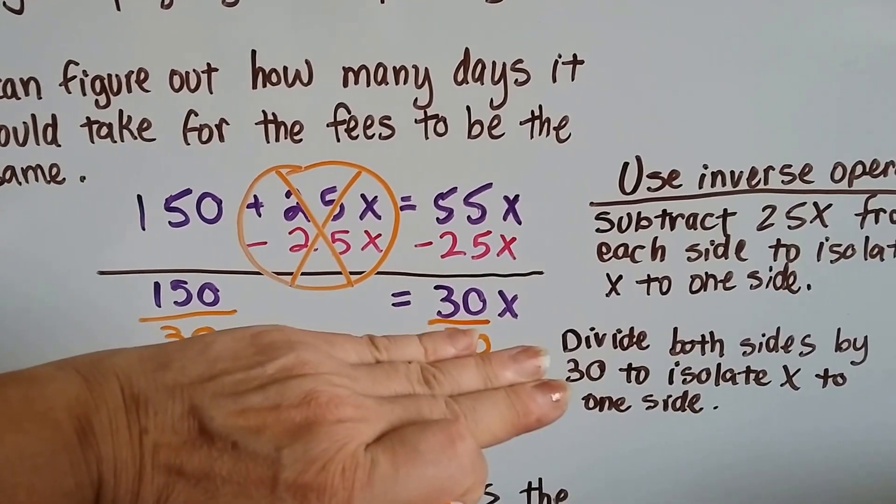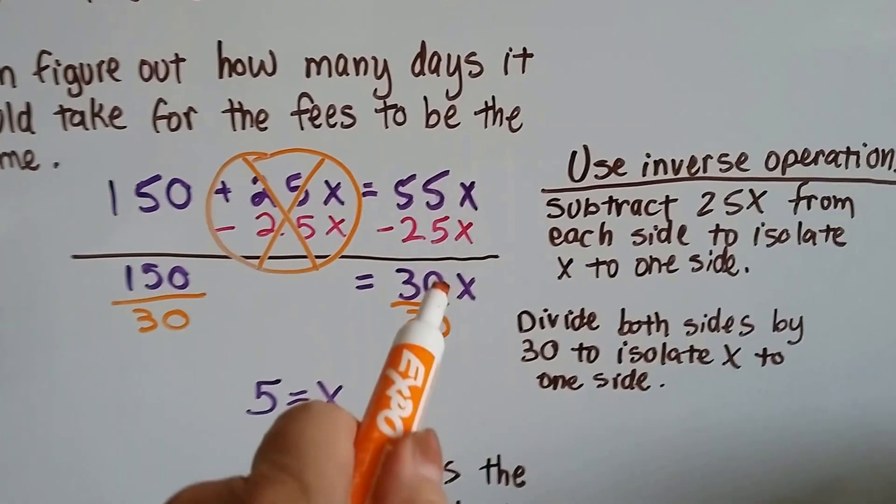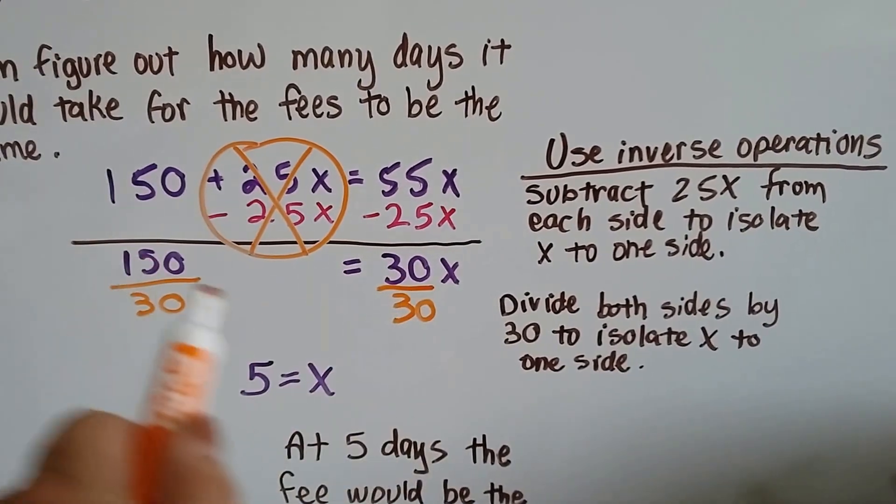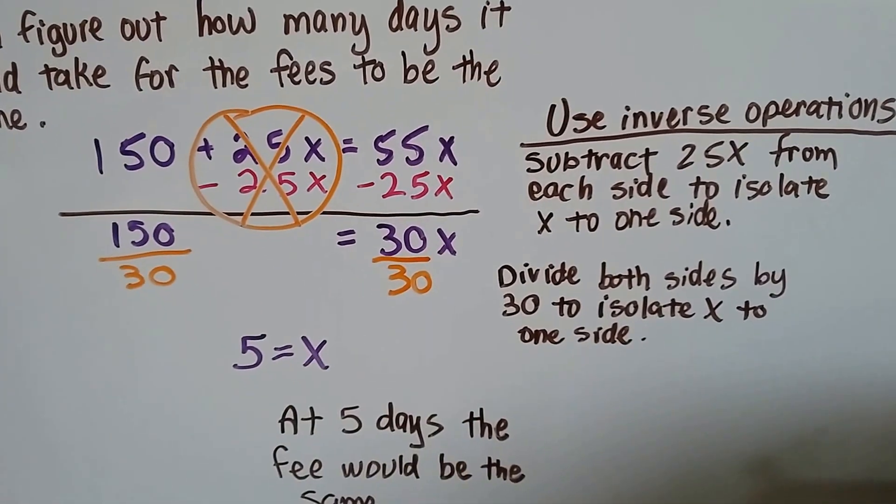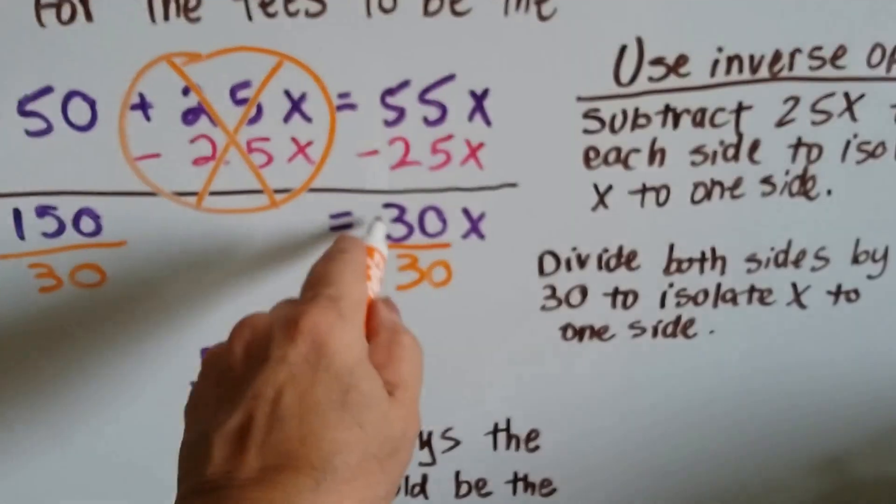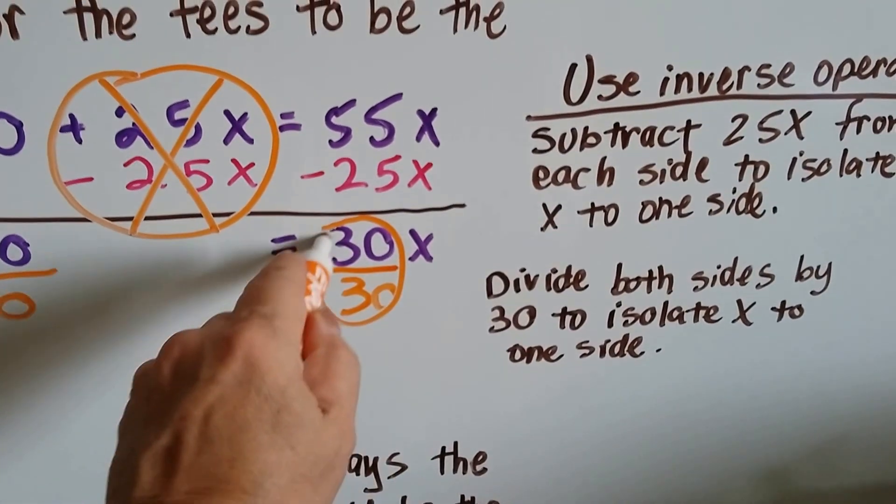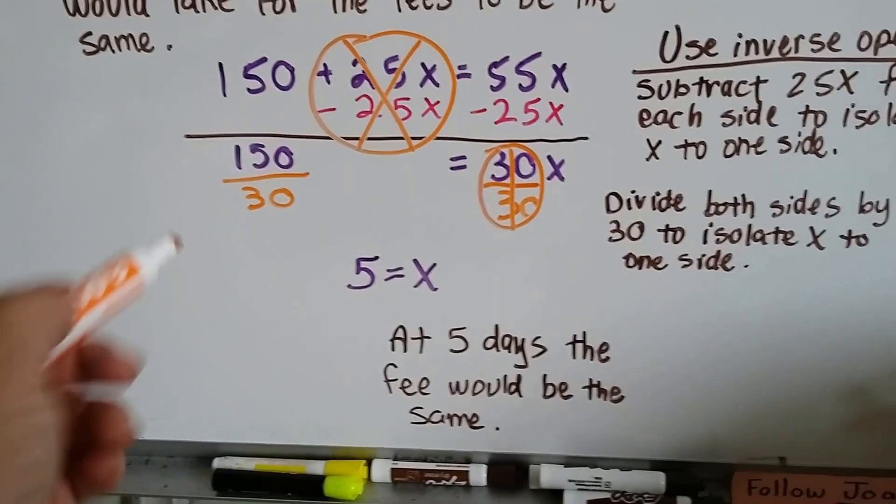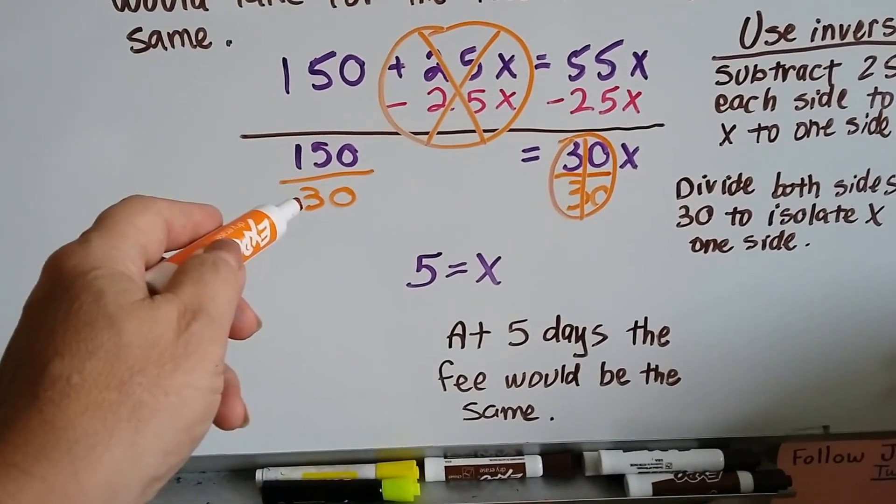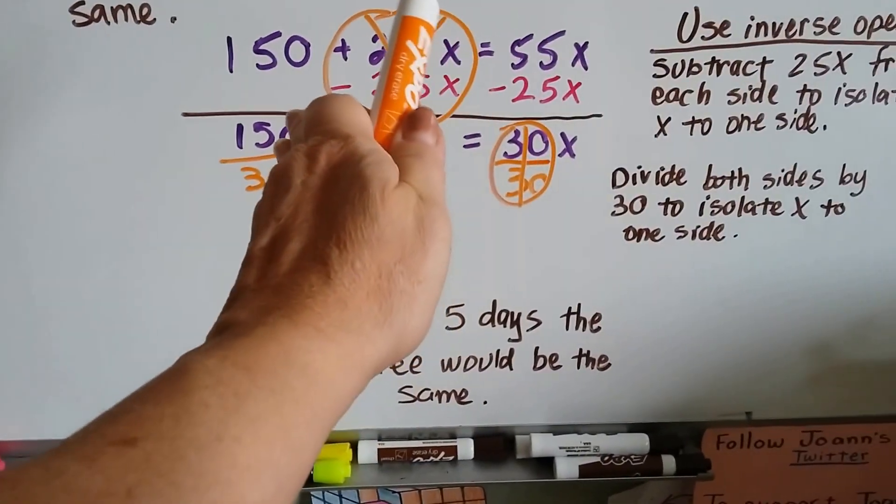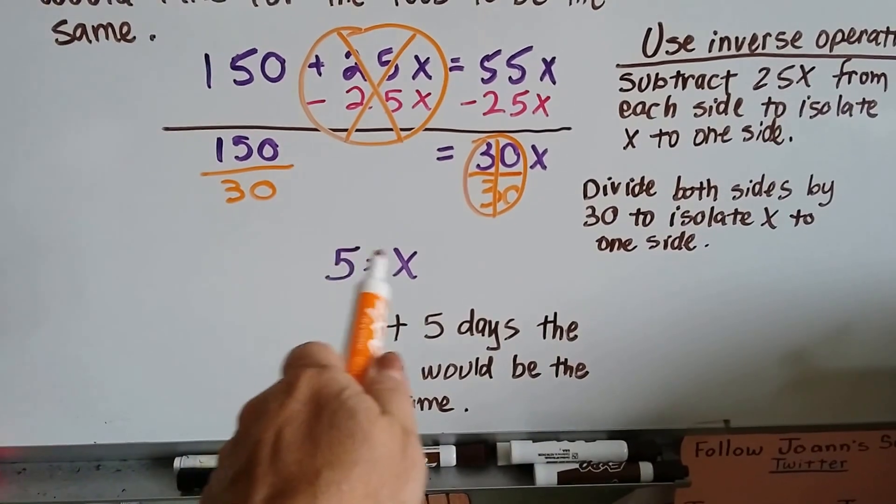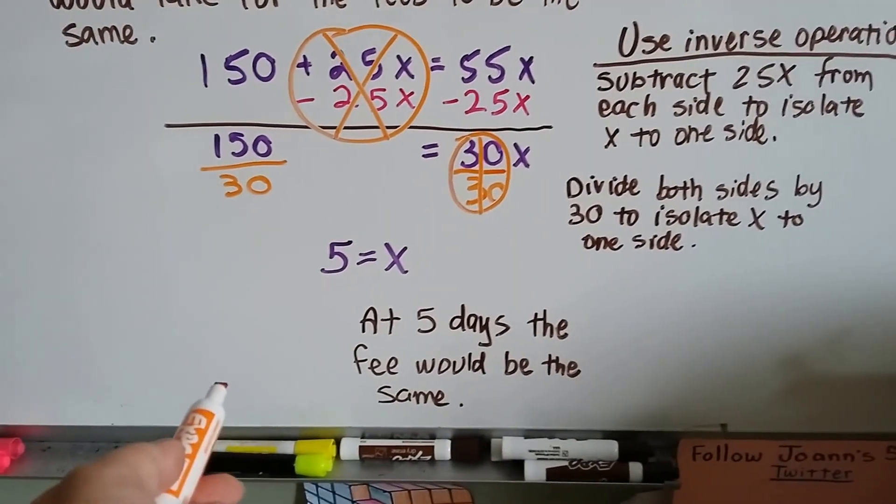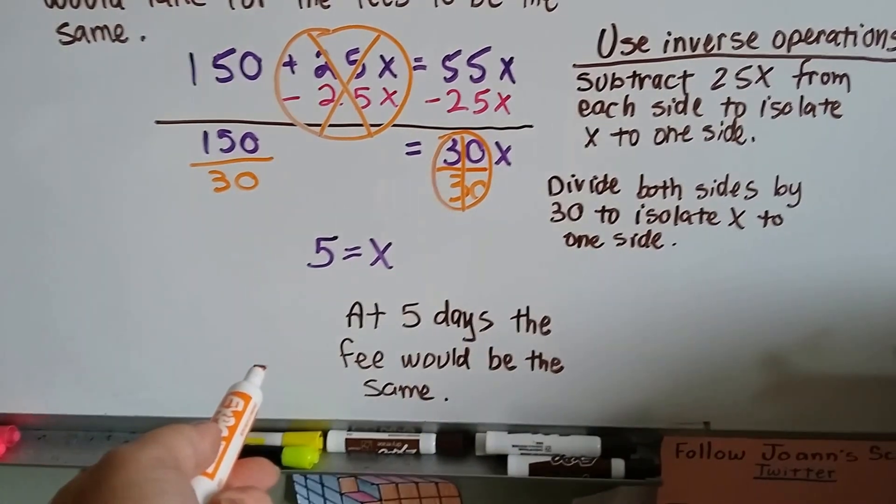We've got 150 equals 30x. Now we can just divide both sides by 30 to isolate this x to one side. And 30 divided by 30, the numerator and denominator are the same, so it makes our friend the invisible one. And 150 divided by 30 is the same as 15 divided by 3. That'd be 5. It would take 5 days and the fees would be the same.